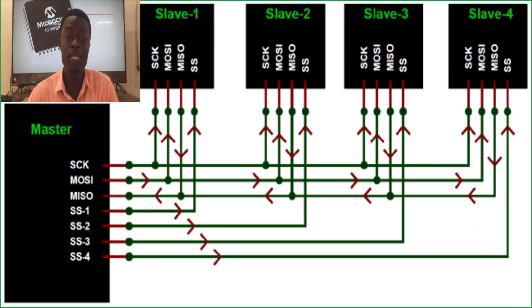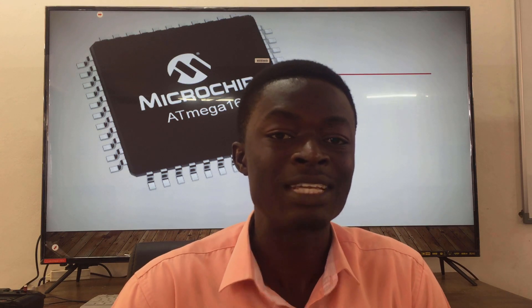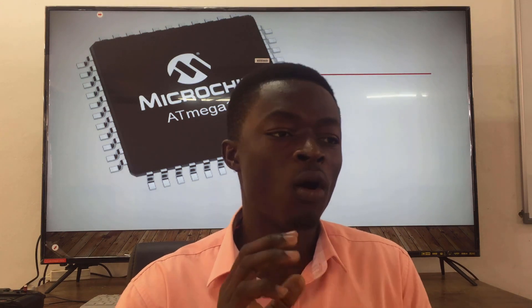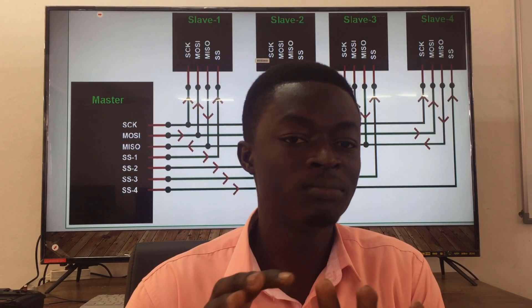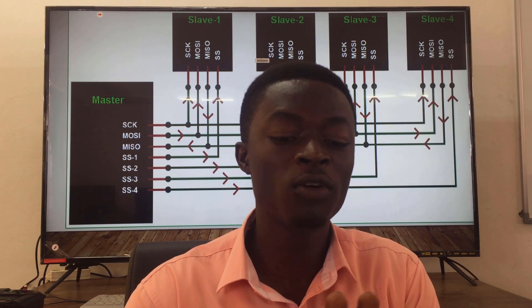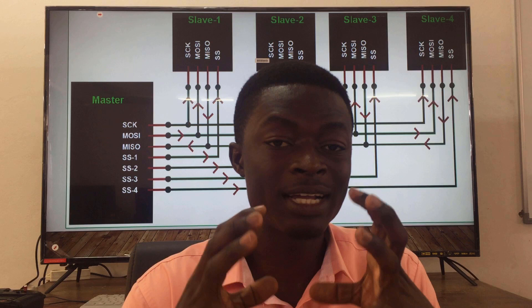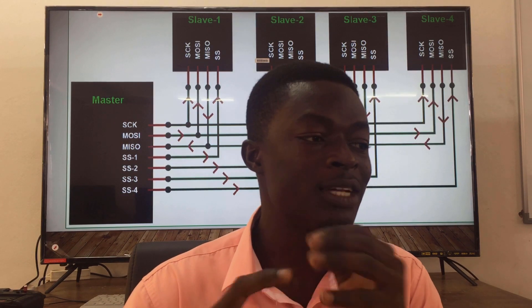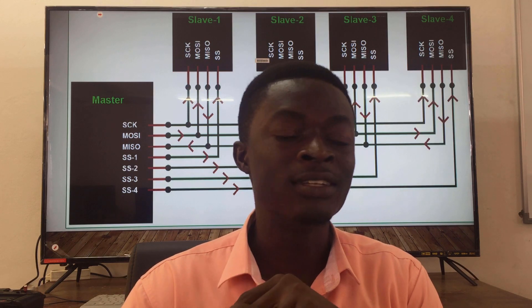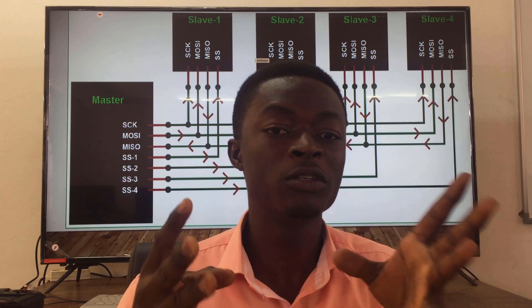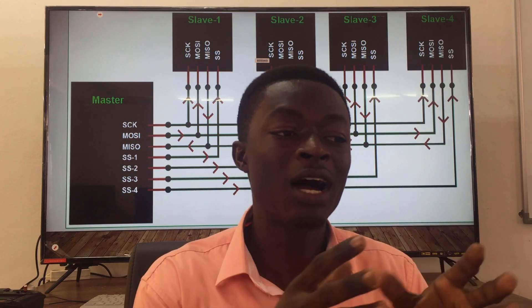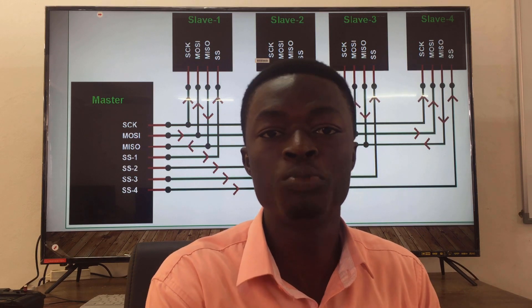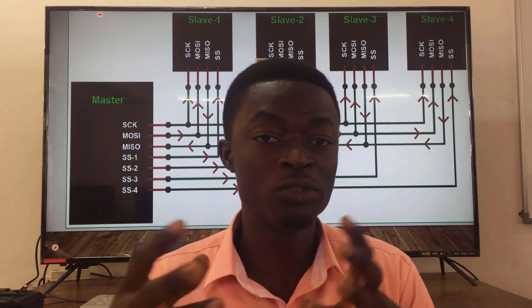Moving on, we look at SPI — Serial Peripheral Interface. SPI is faster compared to I2C. It only accepts four modules or devices connected to it, and it works with one master. It has dedicated pins: clock, MOSI (master out slave in), and MISO (master in slave out). So if you want to use this protocol, you're limited to only four modules or devices.